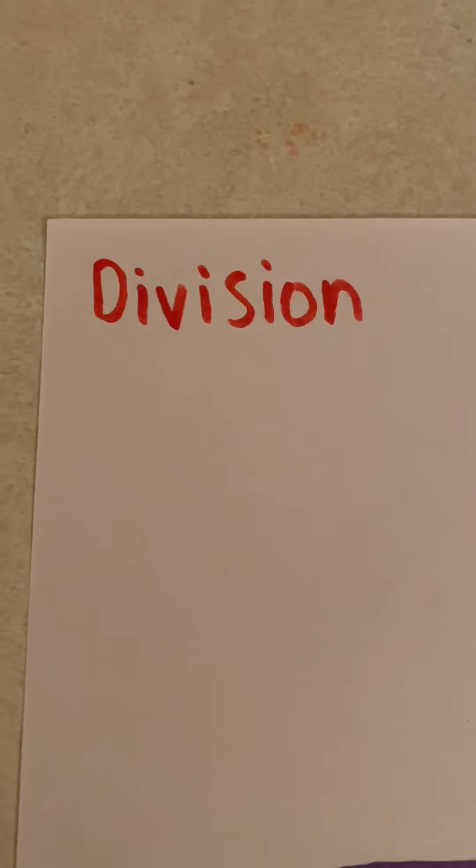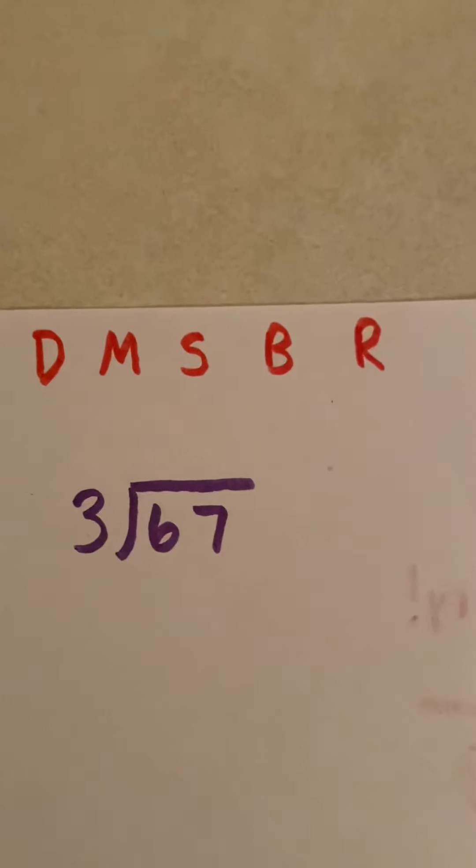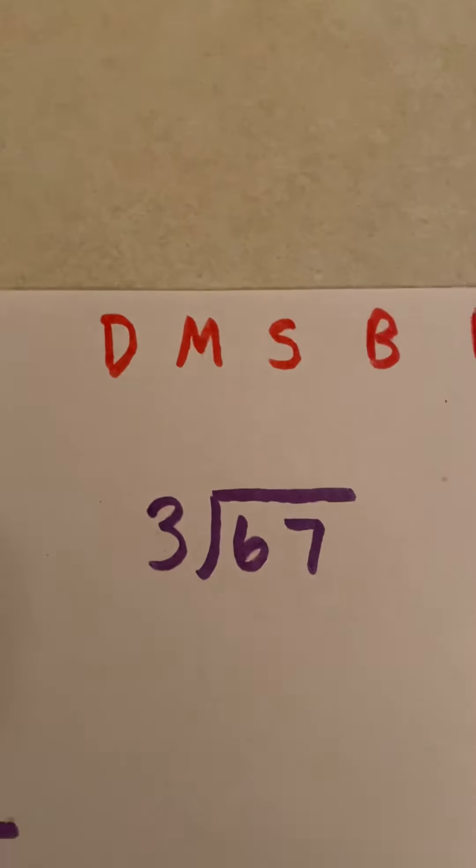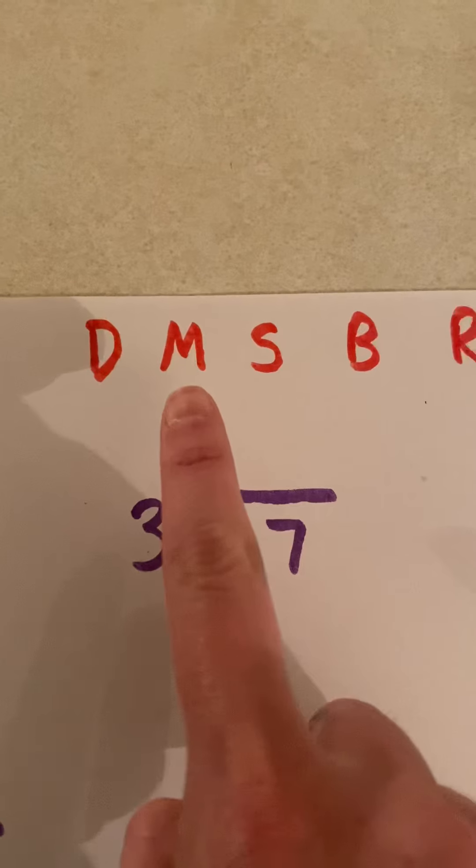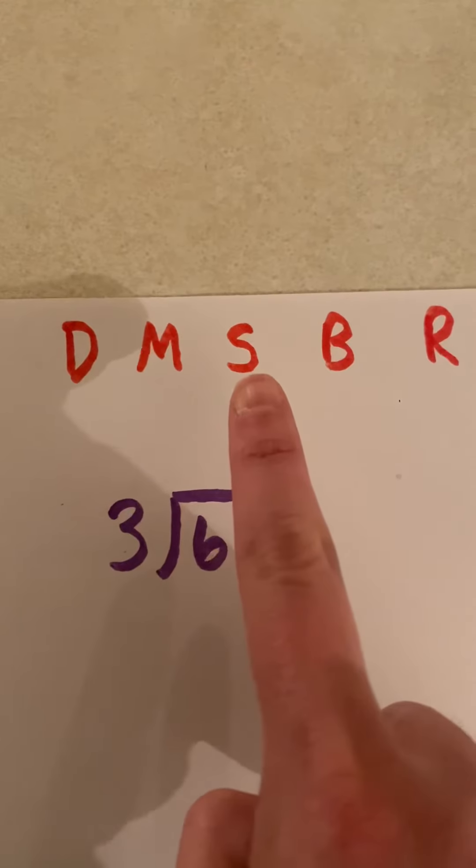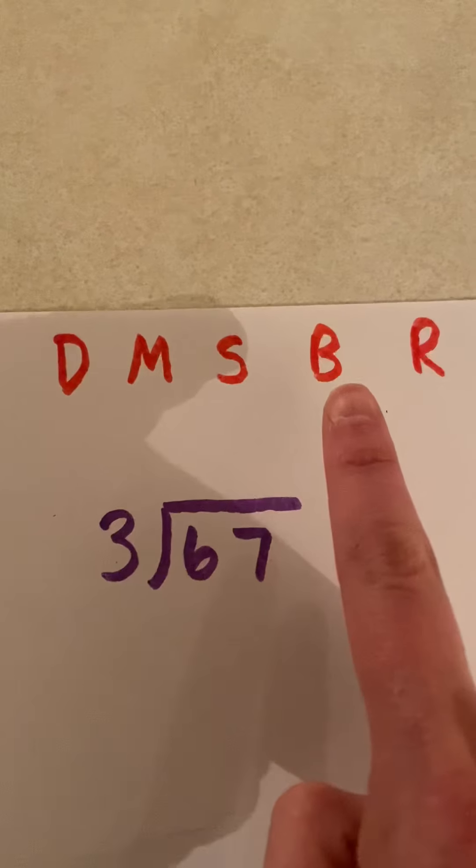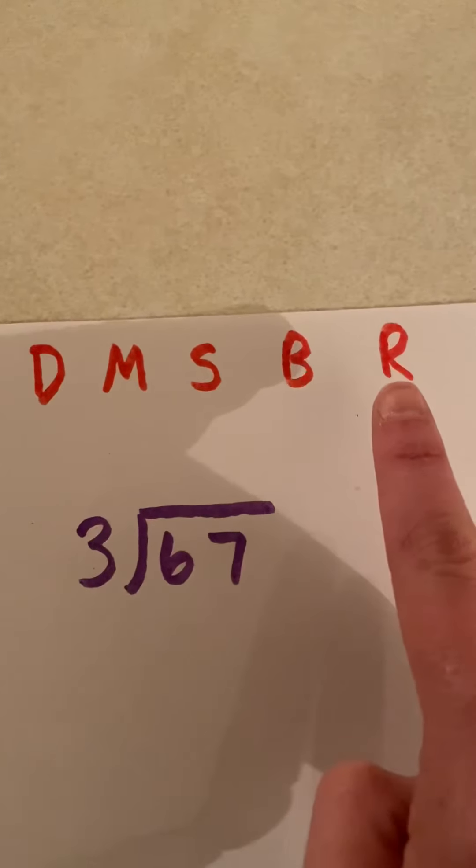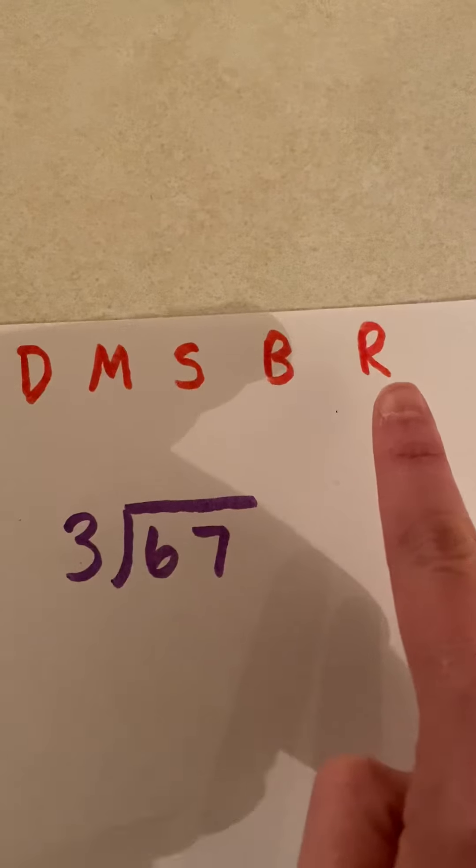Yeah! To help me remember the steps of long division, I like to think about the members of my family. D for dad, M for mom, S for sister, B for brother, R for rover, everybody's favorite dog.